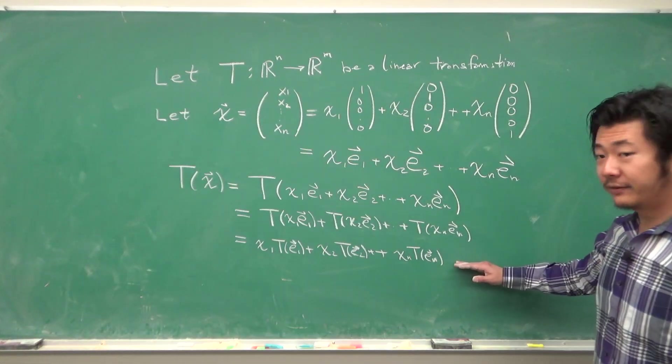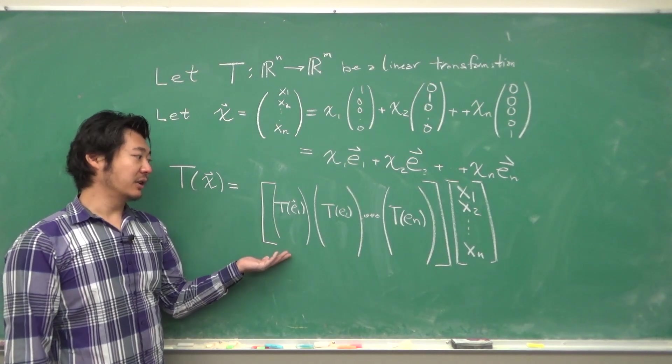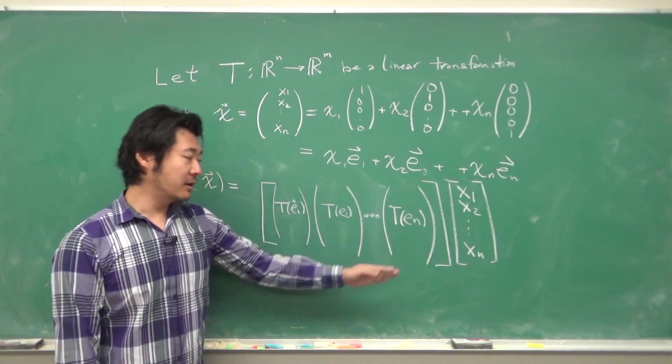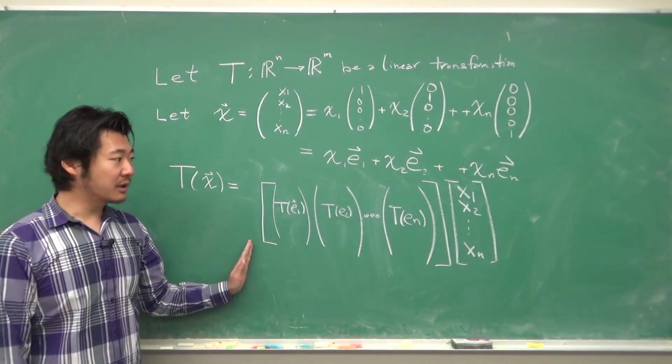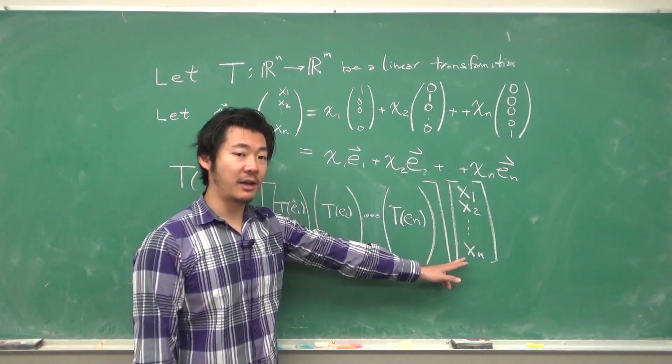So all of this equals this matrix multiplication where we have T(e₁), T(e₂), T(eₙ) are the columns of the matrix and then you have the vector of weights x₁, x₂, up to xₙ.